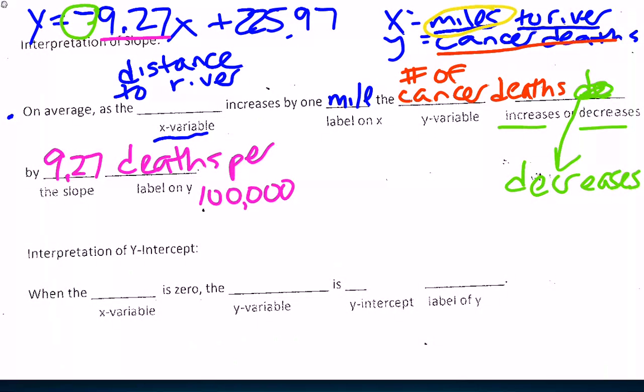All we're doing is filling in the blanks. So my x variable was talking about my distance to the river. So my distance to the river increases by 1, my unit is miles. As the number of cancer deaths, that was my y variable, decreases because my slope is negative by the number of my slope. And my unit for y was deaths per 100,000.